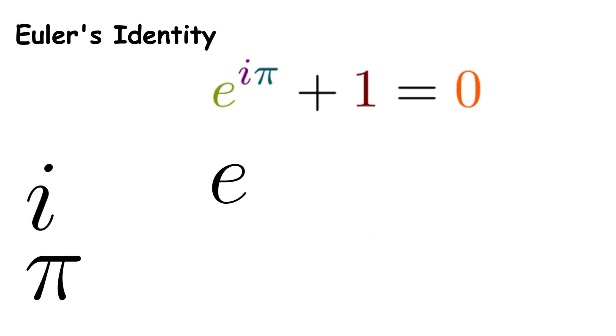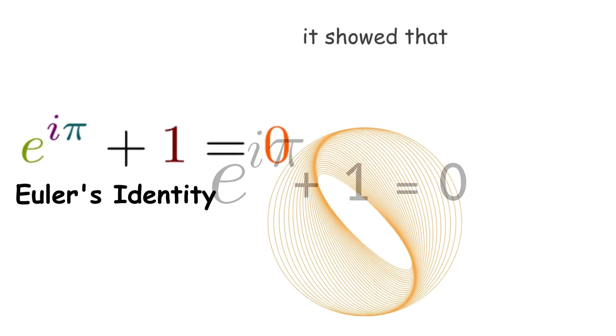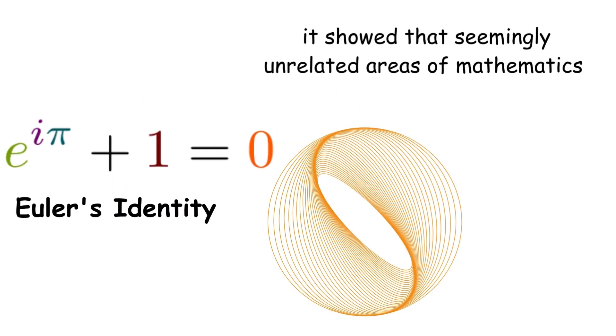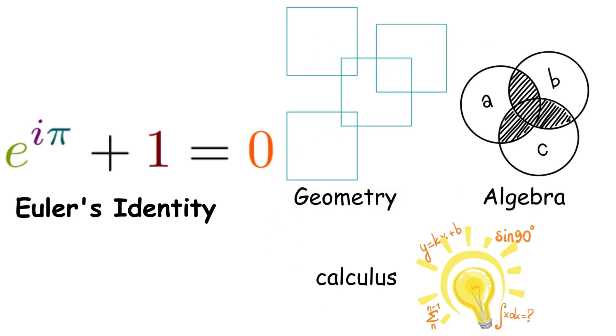When you raise e to the power of i times pi and add 1, you get exactly 0. This stunned mathematicians because it showed that seemingly unrelated areas of mathematics—geometry, algebra, and calculus—are deeply connected at a fundamental level.